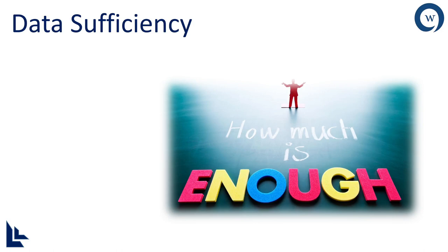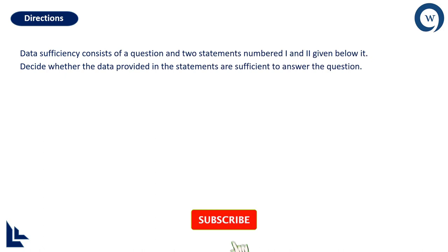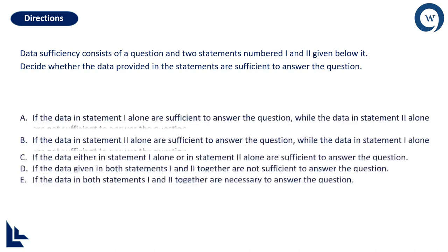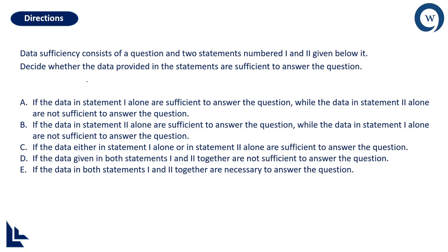Let me tell you two important things about data sufficiency problems. Data sufficiency problems will always be in this format: there will be a question in the beginning followed by two statements — statement number 1 and statement number 2. Depending upon the data available in statements 1 and 2, you need to decide if it is possible to find out the answer to the question. You can pick your answer out of these 5 choices: A, B, C, D, or E.